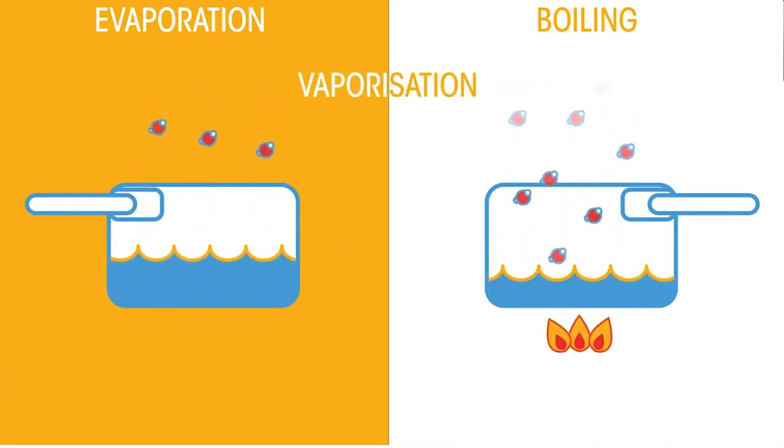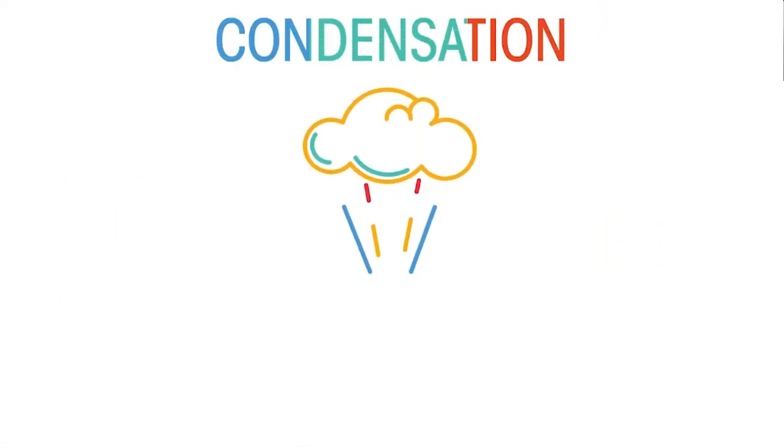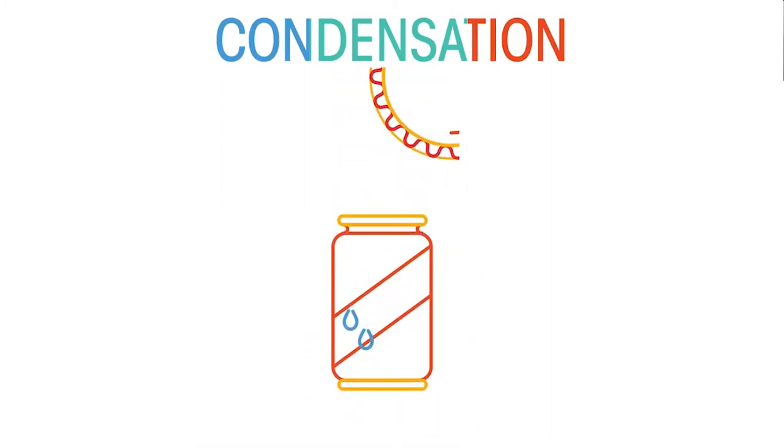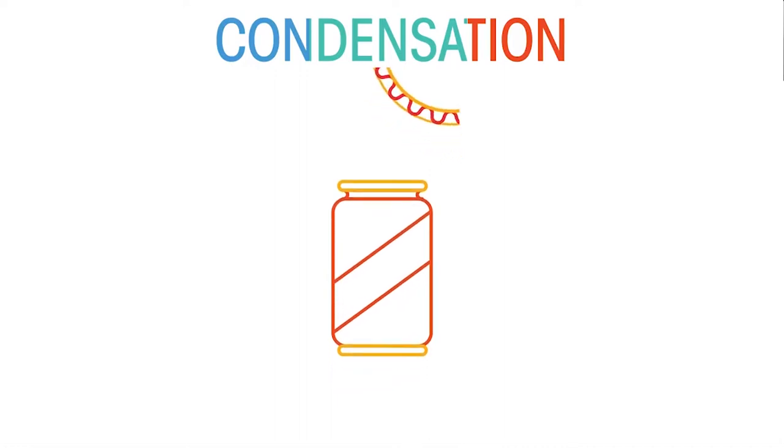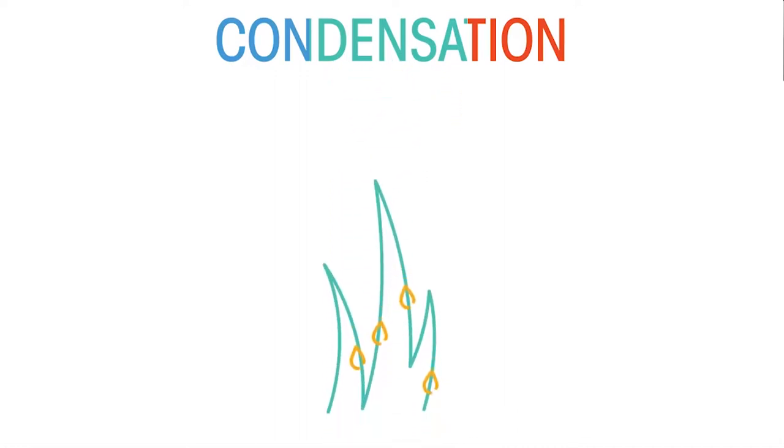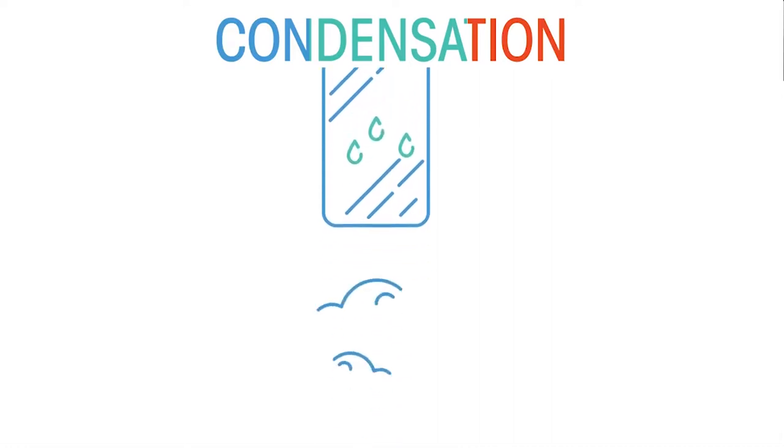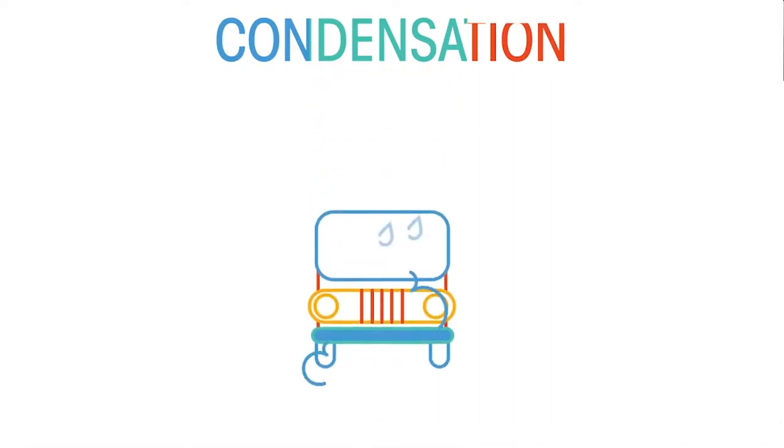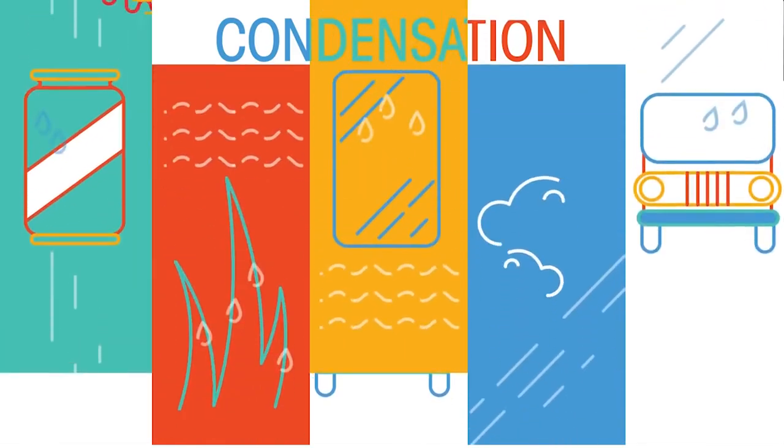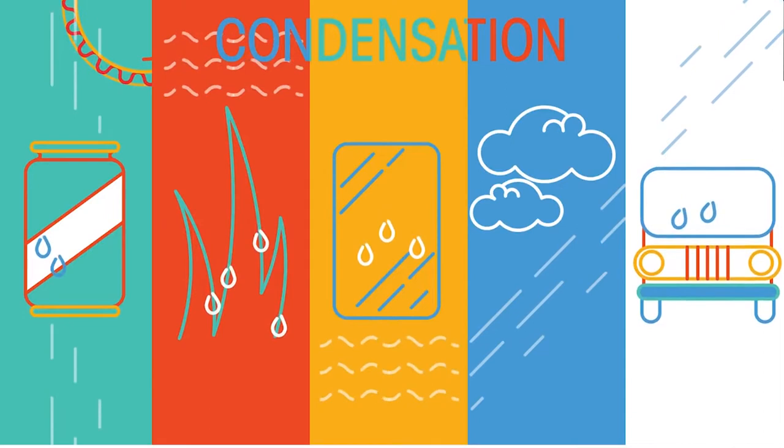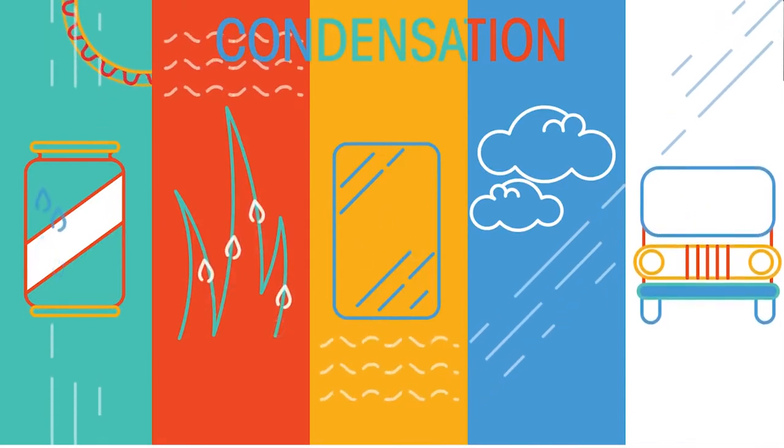The opposite of the vaporization process is condensation, the transition from gas to liquid. Think of a cold can of soda on a hot day, those water droplets on the outside. Or the dew on the grass in the morning. Or the steamed up mirror after a hot bath. Even the clouds in the sky. Or a foggy windscreen in a car. These are all examples of condensation. Water vapor in the air has cooled down to form liquid droplets of water.